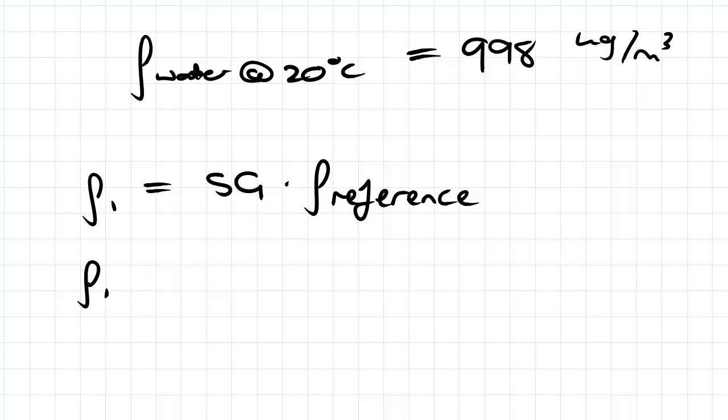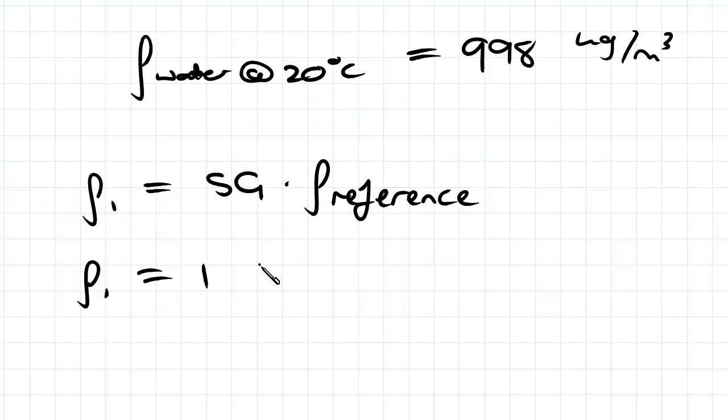So for ρ₁, our specific gravity was 1. So we've got 1 times 998. So our density for fluid 1 is 998 kilograms per meter cubed.